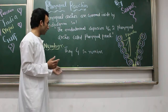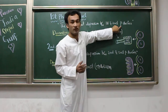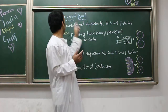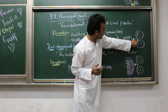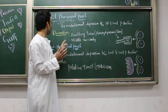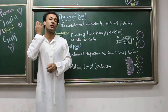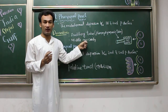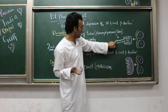Now let's talk about the first pharyngeal pouch. The endodermal depression between the first and second pharyngeal arches is called the first pharyngeal pouch. You can see in the diagram — this is the first pharyngeal arch and this is the second. The endodermal depression between them is the first pharyngeal pouch, and it gives rise to the auditory tube and middle ear cavity.